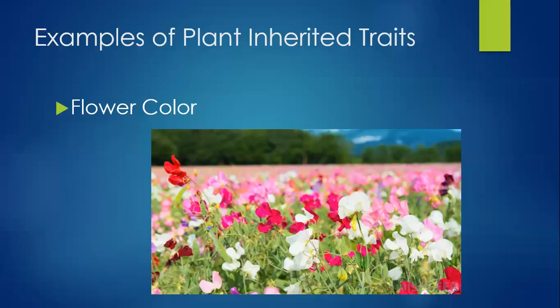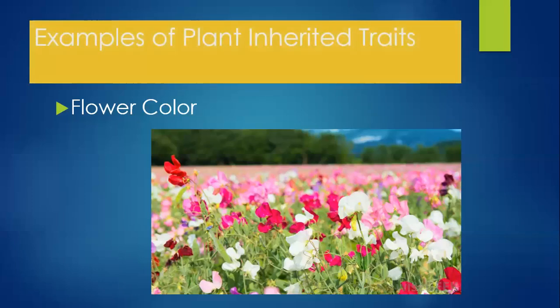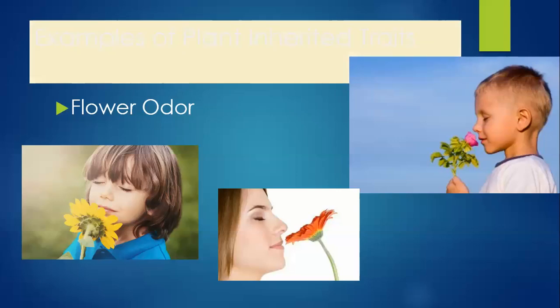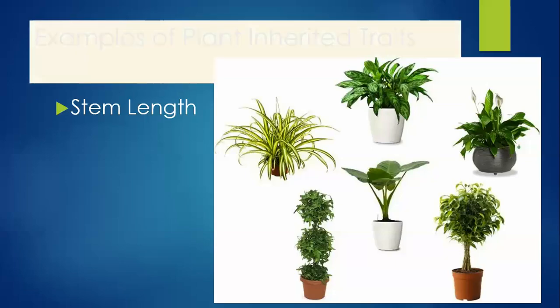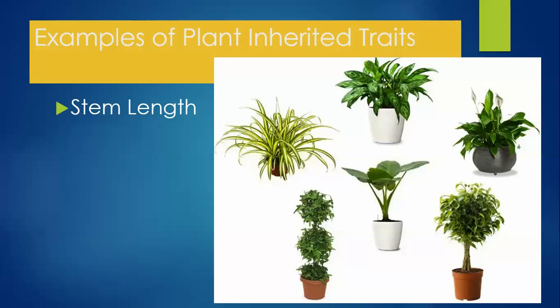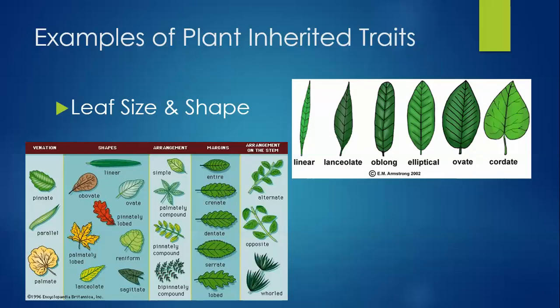Let's look at some examples of plant inherited traits. Some of the traits include the flower color. More examples include the flower odor. Also, stem lengths are traits that plants have. As you can see in the pictures, some stems are longer, some are shorter. The leaf size and shape are extremely important as well.